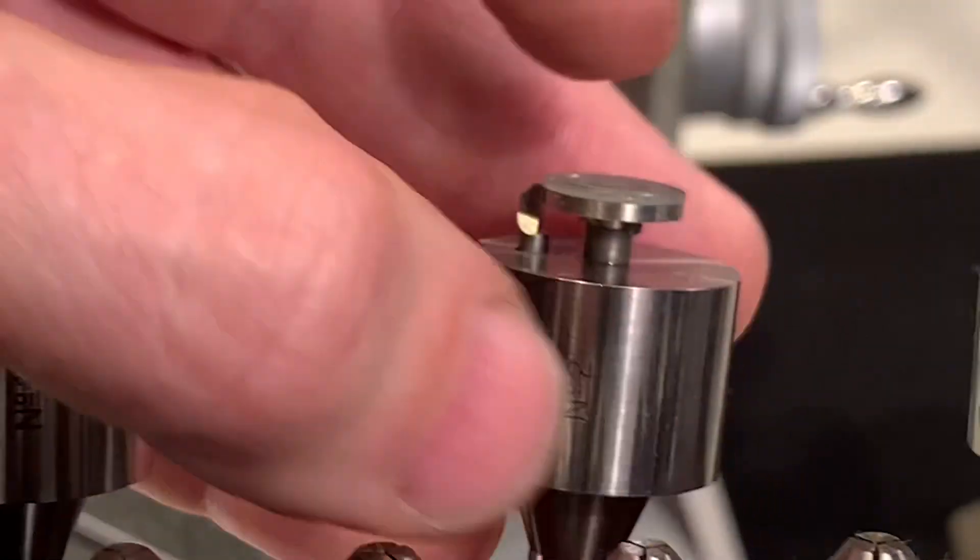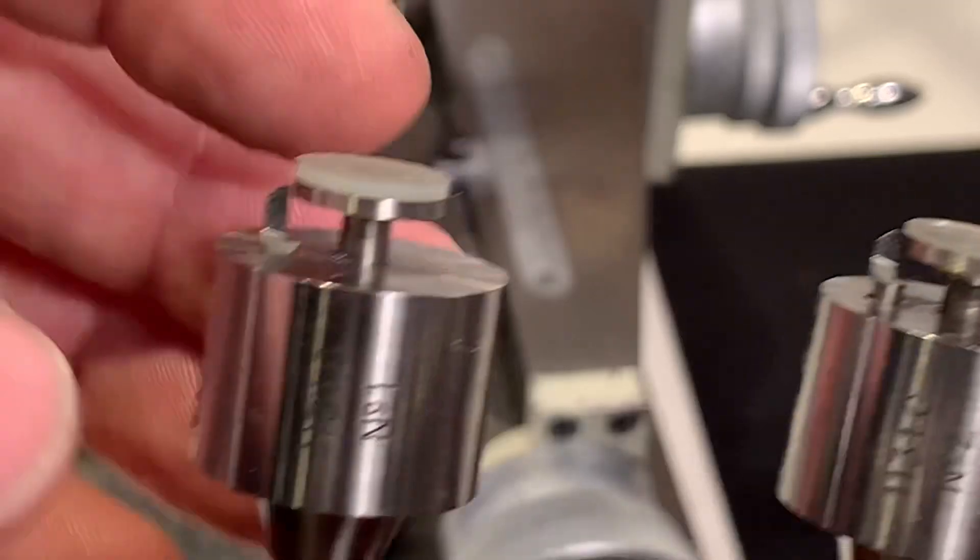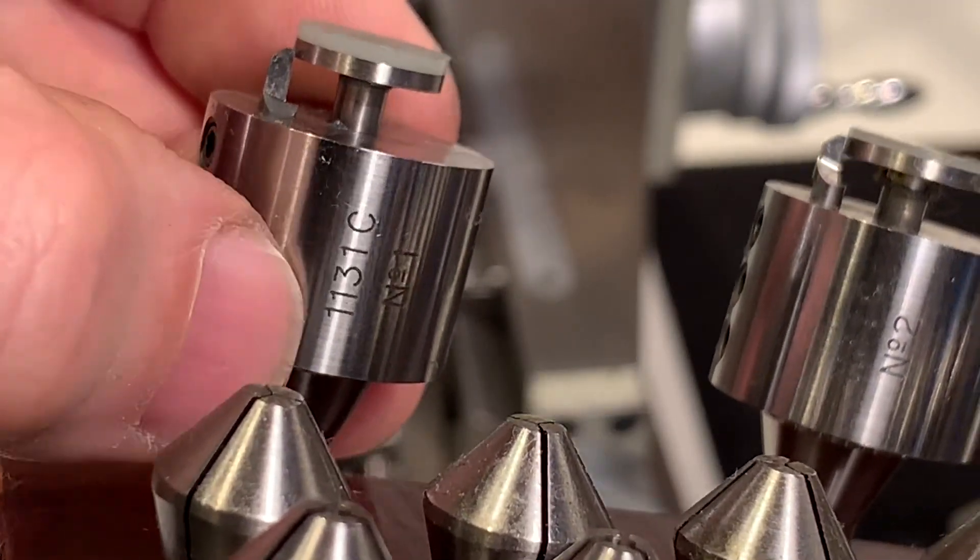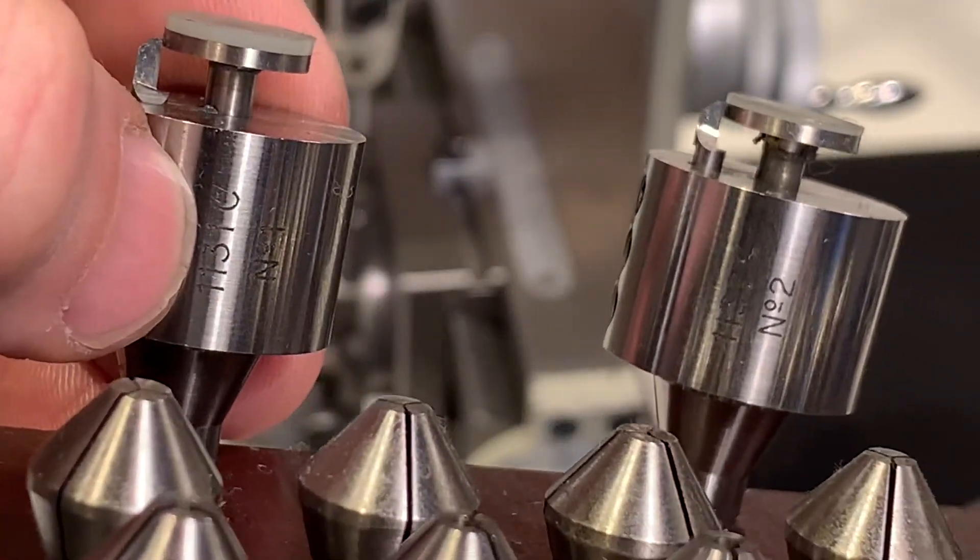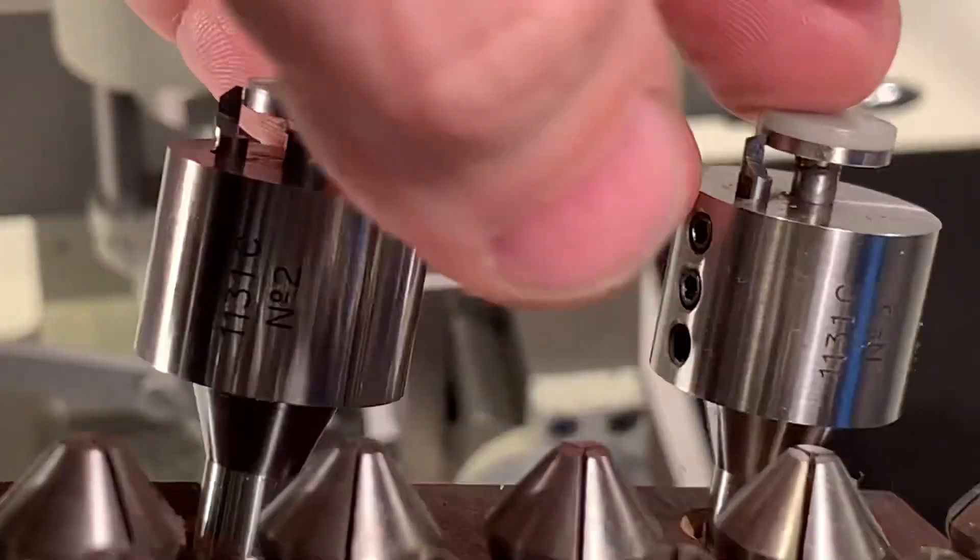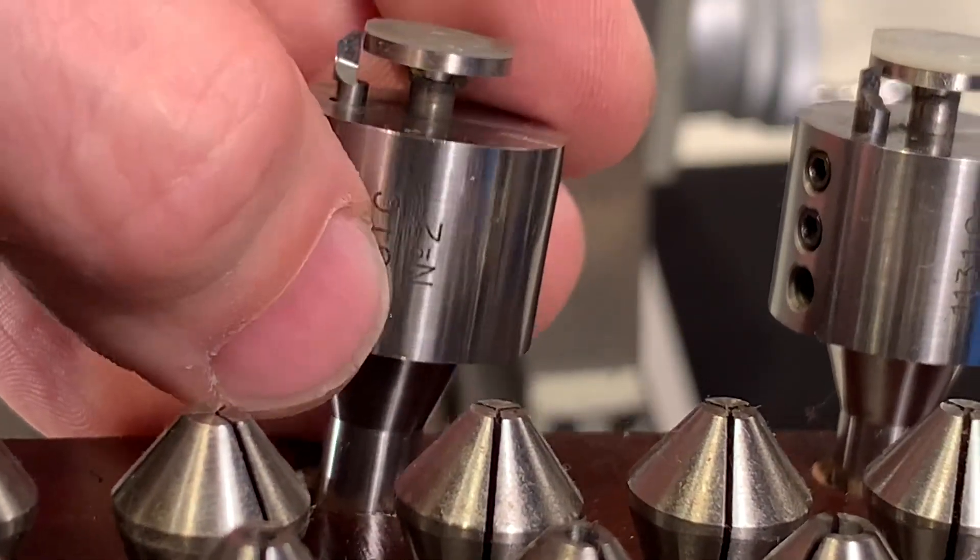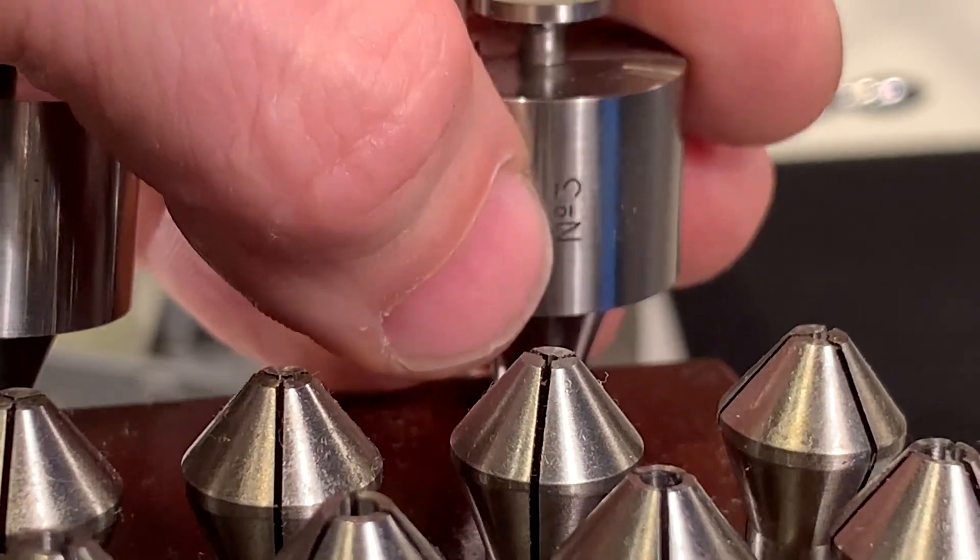And then I have the special set here. I don't know from which brand. It says here 1131C and then you have number 1 and the same number, and number 2 and the same number, and number 3.